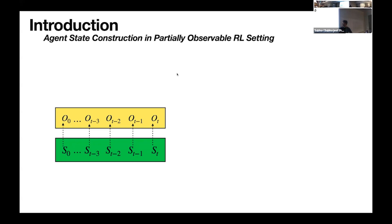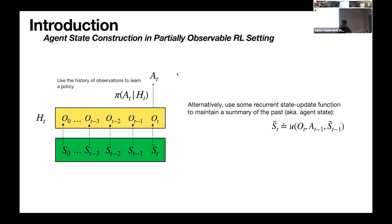To deal with this scenario, reinforcement learning uses agent state construction. Instead of using the underlying state — which isn't available — we use the entire history of observations seen so far and condition the policy on this history. However, this becomes expensive because the history grows arbitrarily large. So instead, the agent maintains an approximate state s̃_{t-1} of fixed dimension, using a state update function u to update it each time new data arrives, and uses this approximate state to learn a policy.